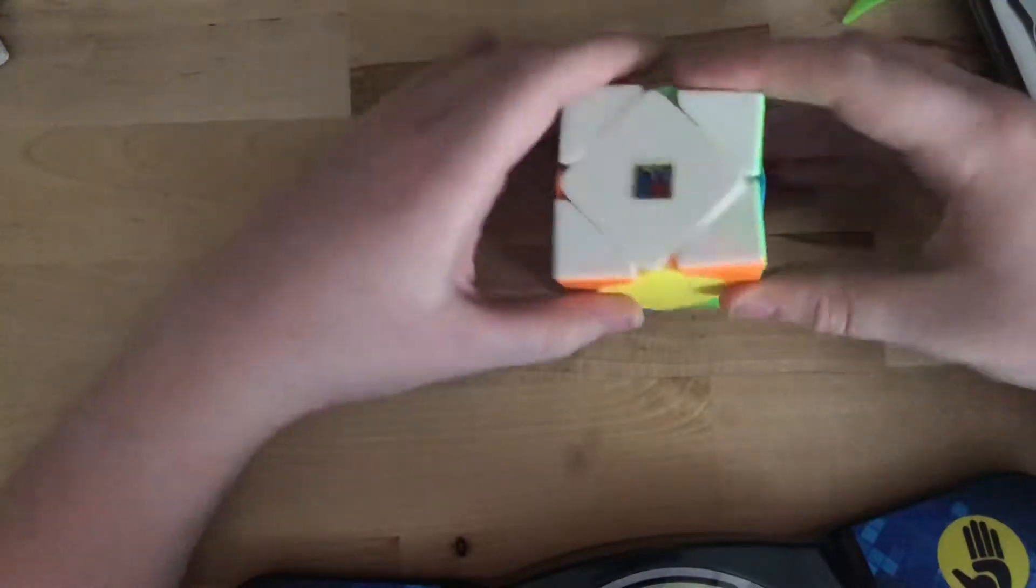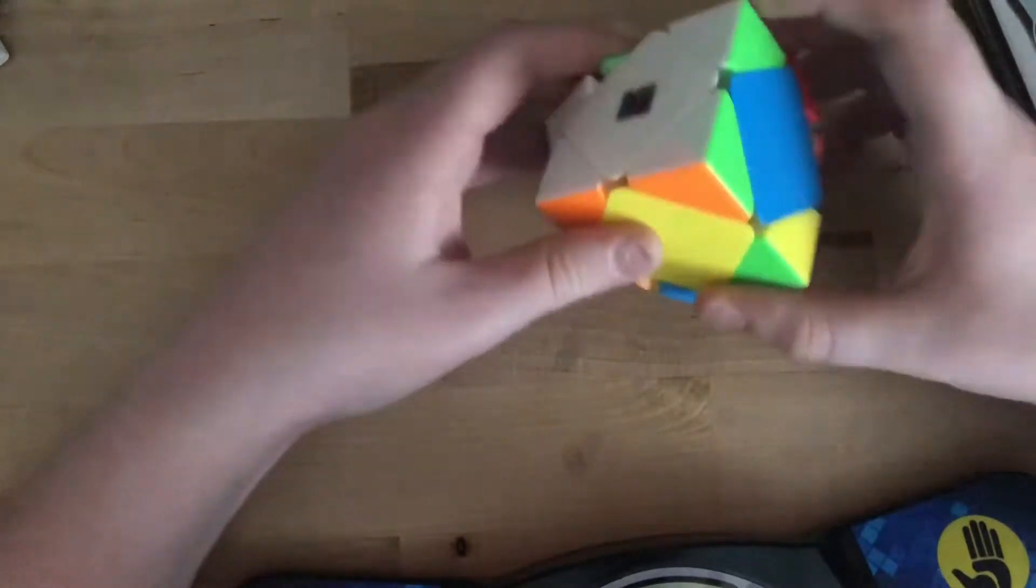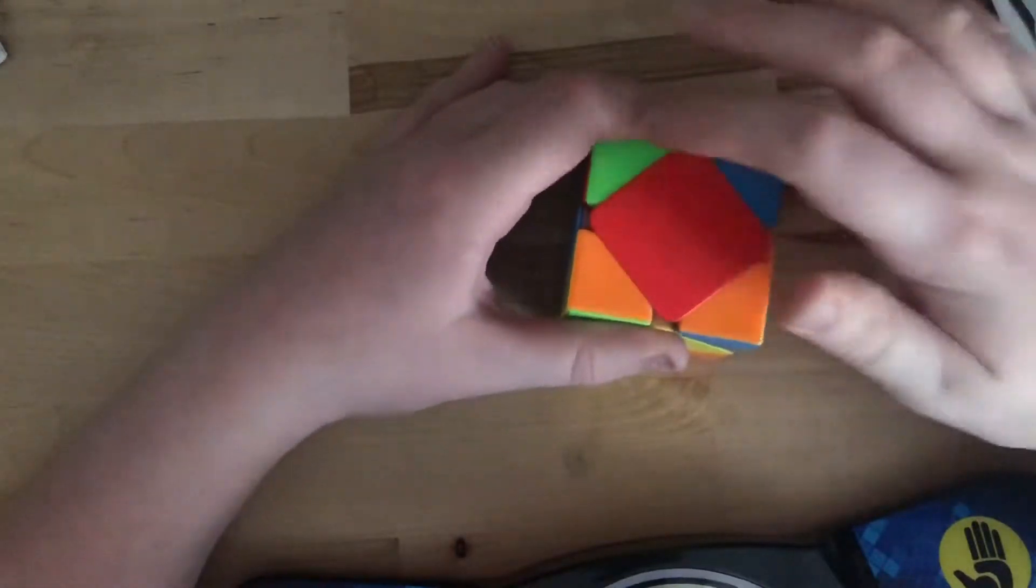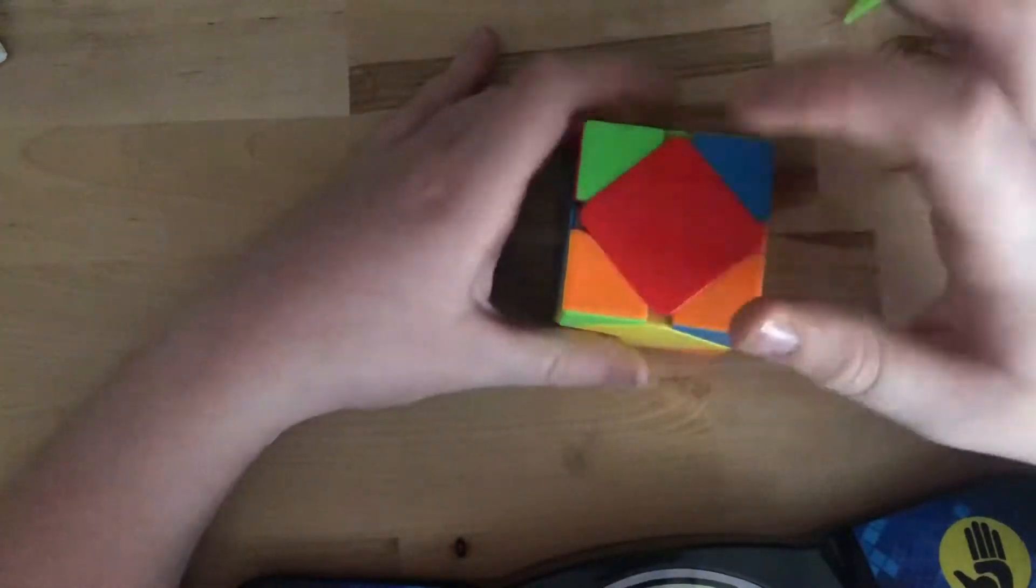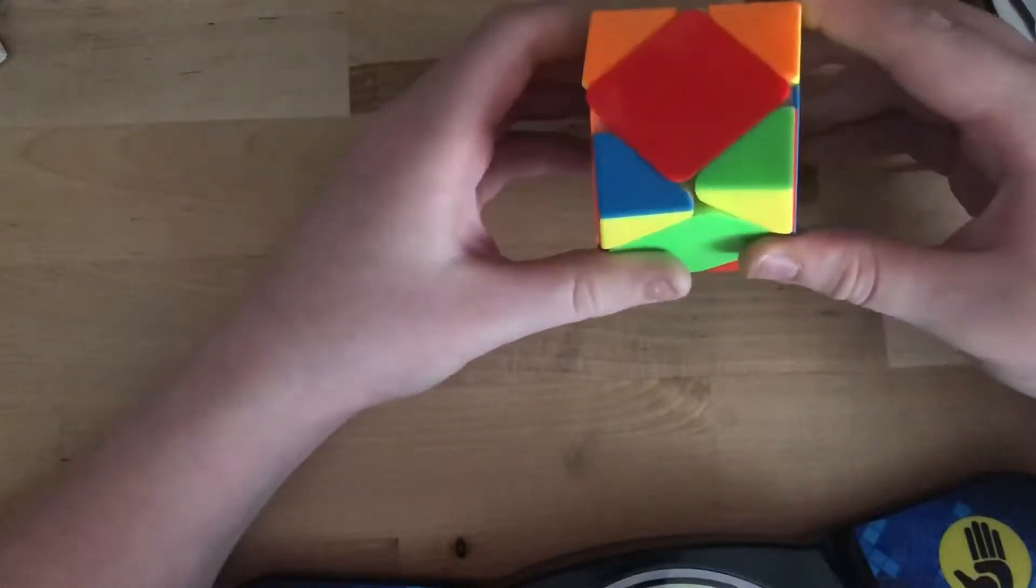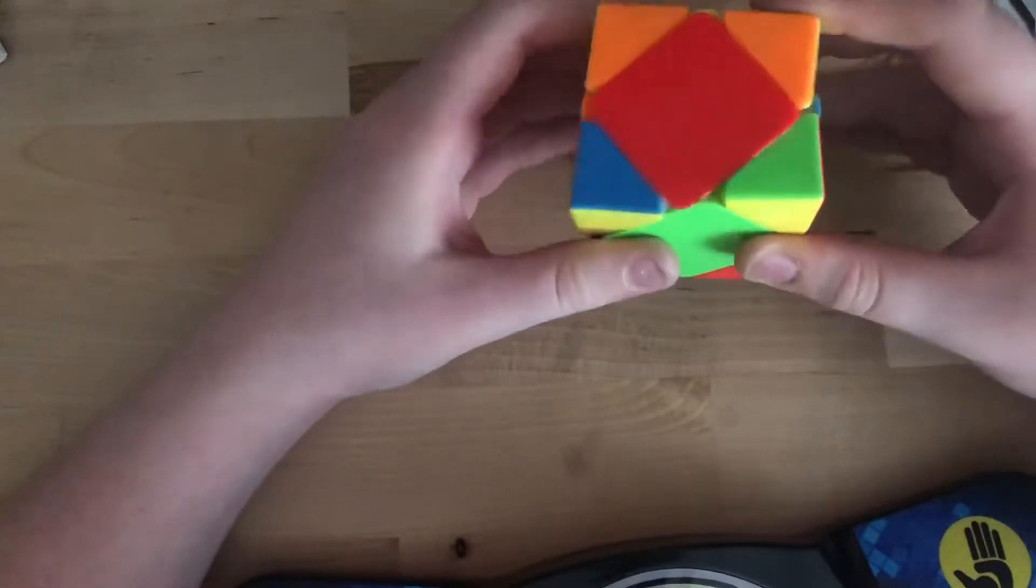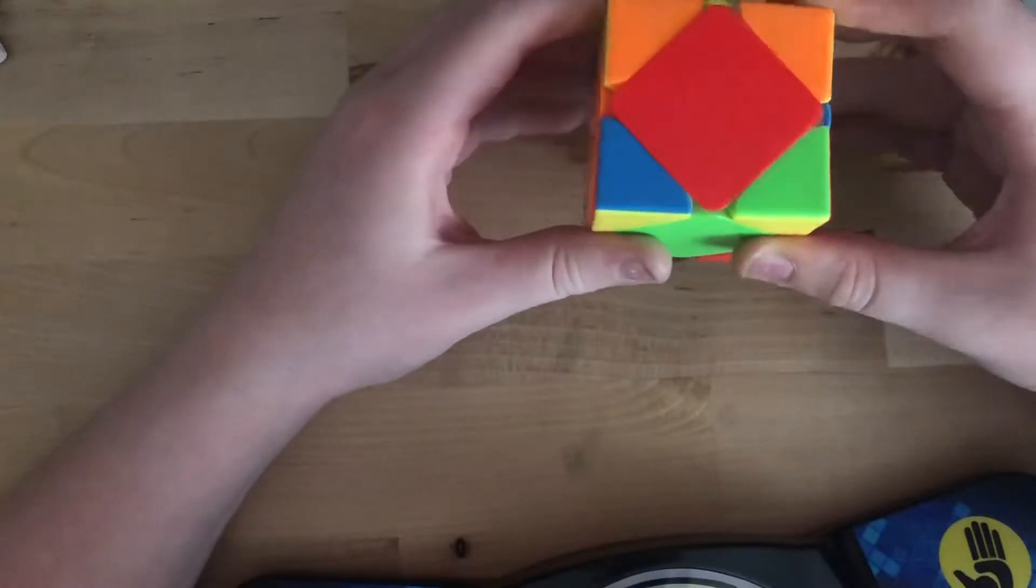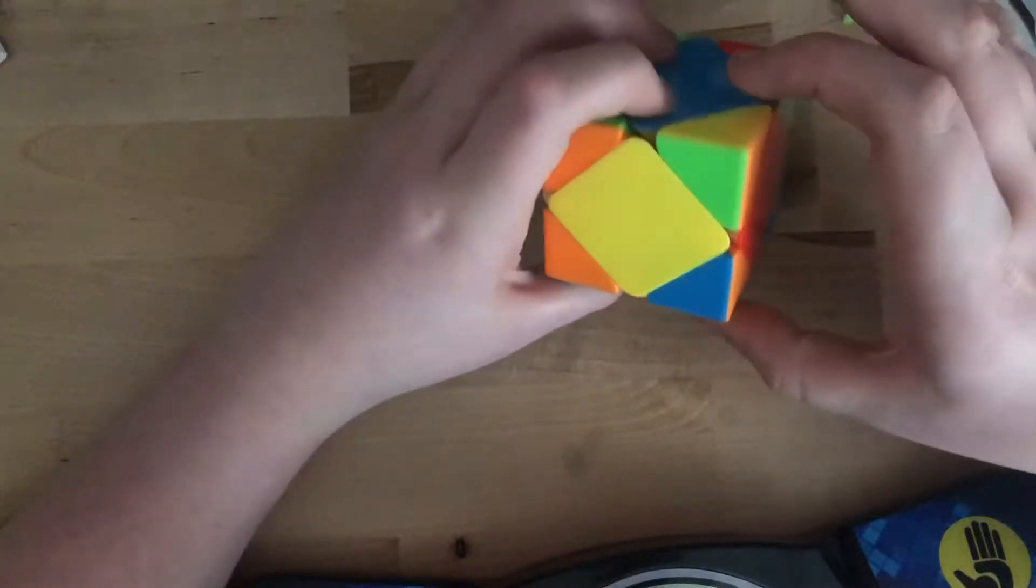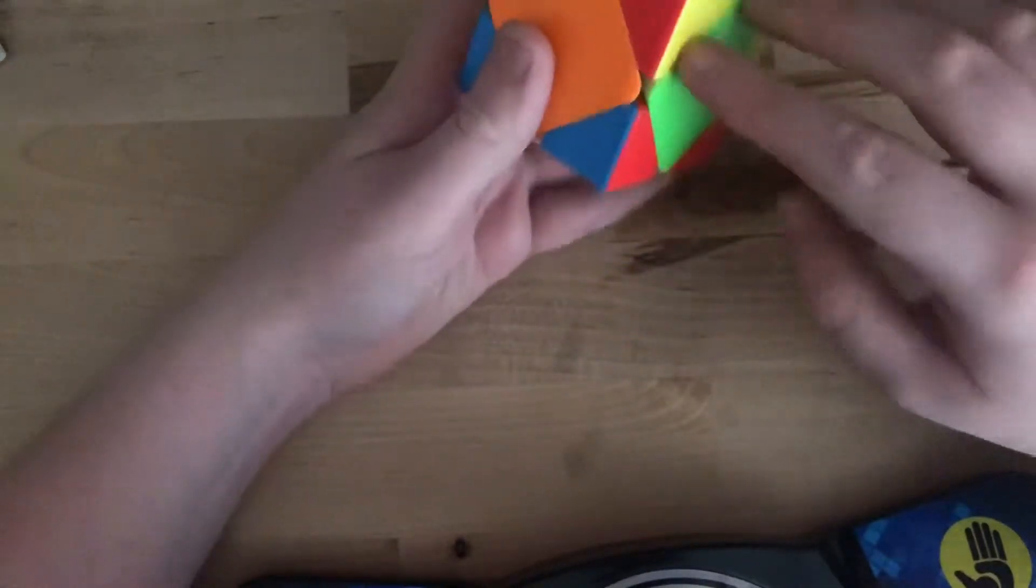Alright, now white is solved. Let's move on to solving the four yellow corners. Now there are only two different ways you can get them, and it's either like this where two are facing the opposite way and two are facing the same way.